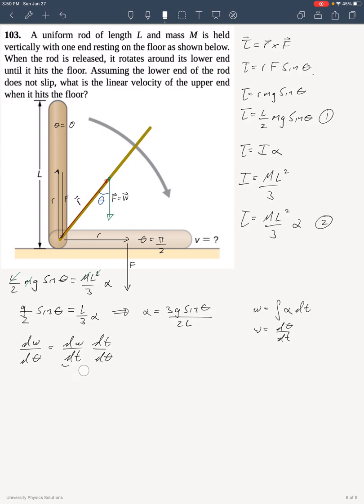So, let's rewrite this, so it's going to be d omega dt is alpha, and dt over d theta is 1 over omega. Okay, so then I have that d omega d theta is equal to alpha times 1 over omega, which, by rearranging, gives me omega d omega equals alpha d theta.